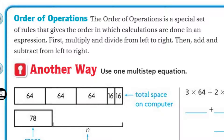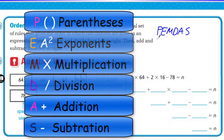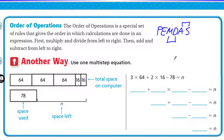Now we're getting something called Order of Operations. The order of operations is a special set of rules that gives the order in which calculations are done in an expression. First, we multiply and divide from left to right. Then we add and subtract from left to right. You may be familiar with PEMDAS — 'Please Excuse My Dear Aunt Sally.' Parentheses and exponents actually take place before multiply and divide, but you may not be doing that yet in fourth grade. Multiply and divide are like a tie, and add and subtract are a tie. From left to right, you can divide before you multiply if division comes first.